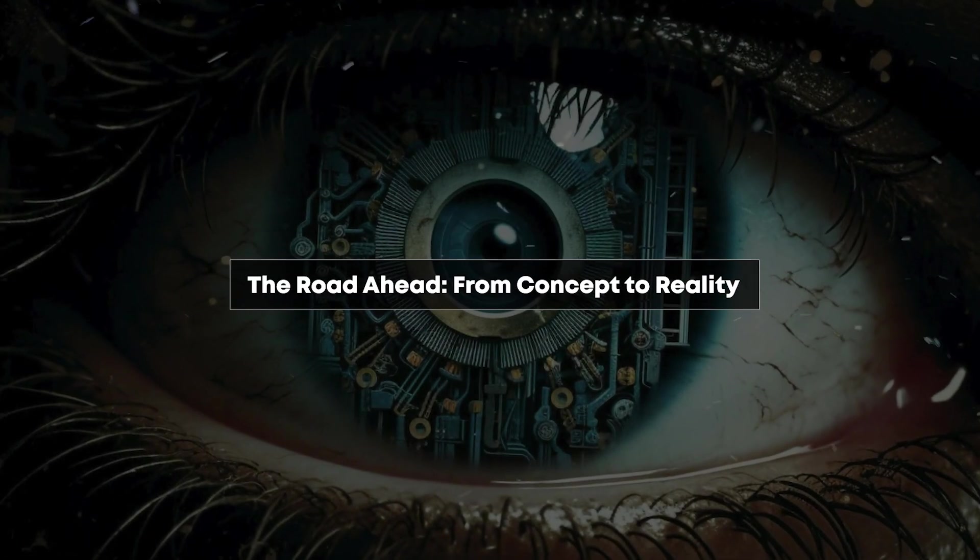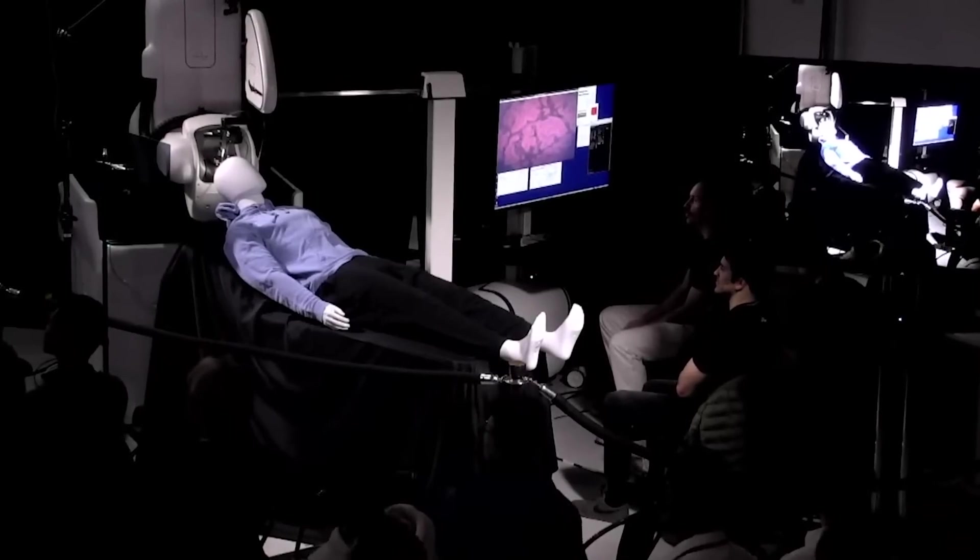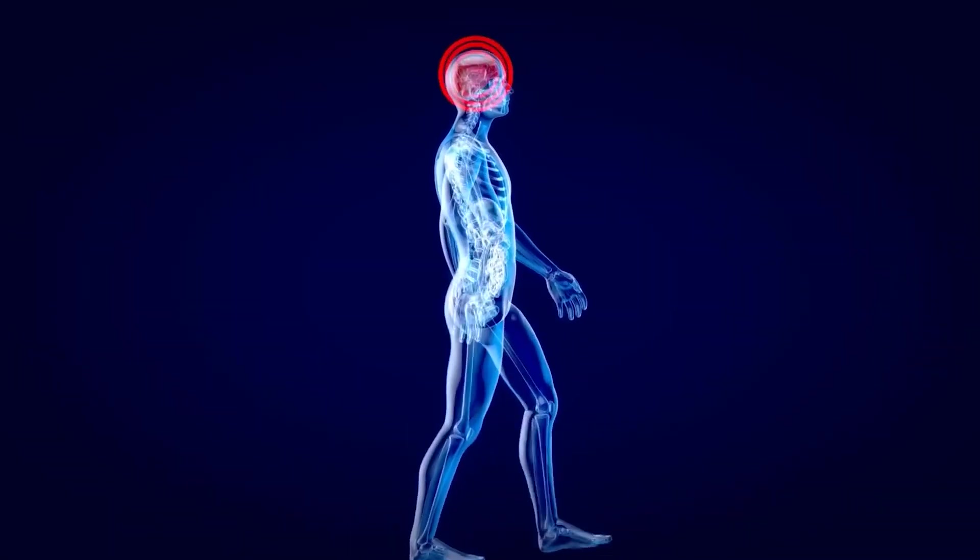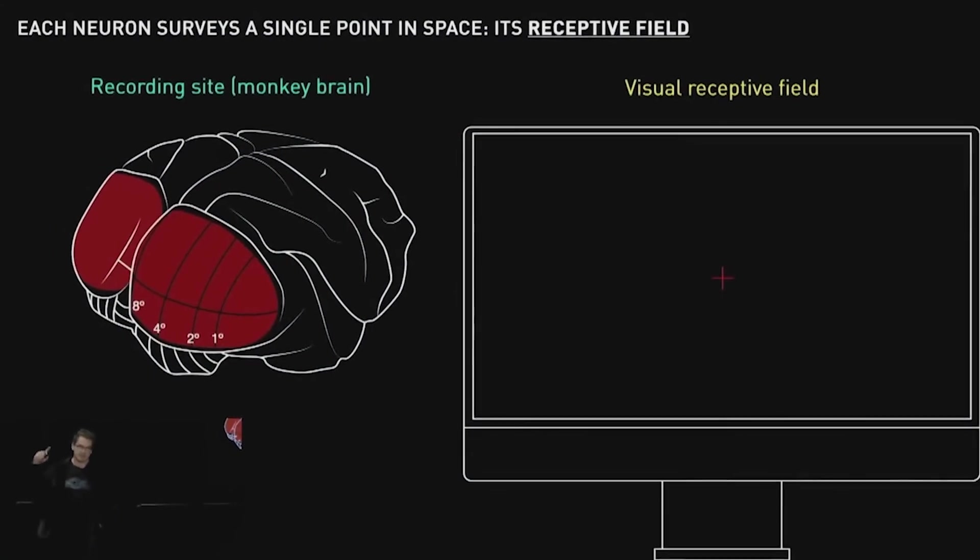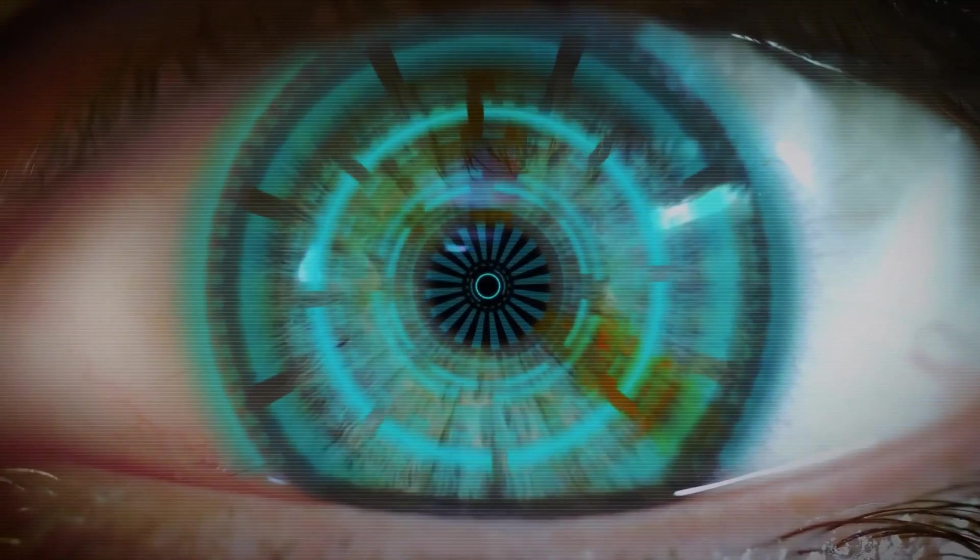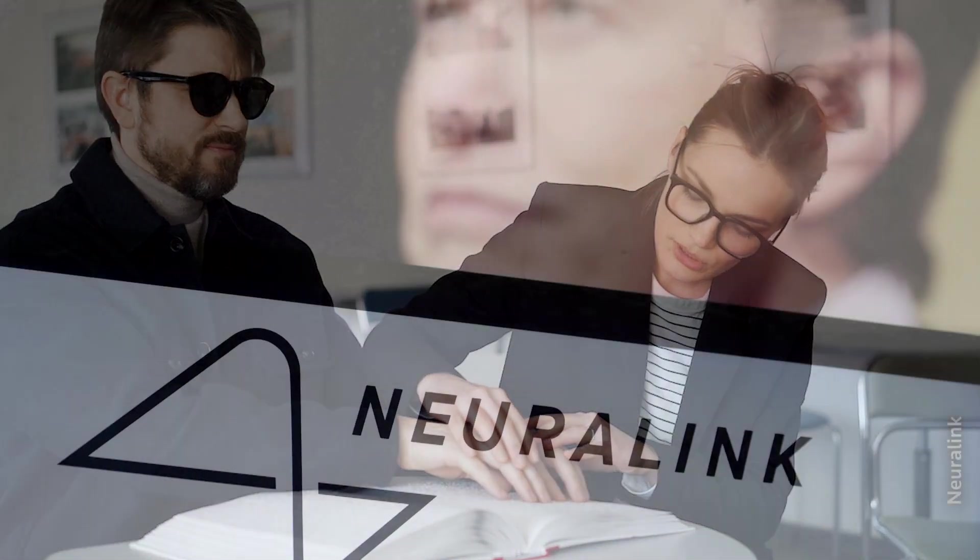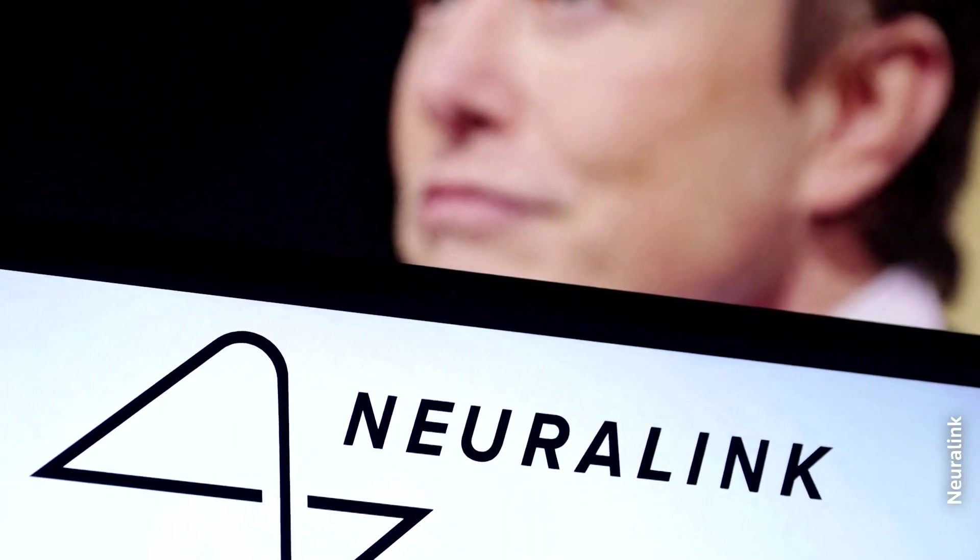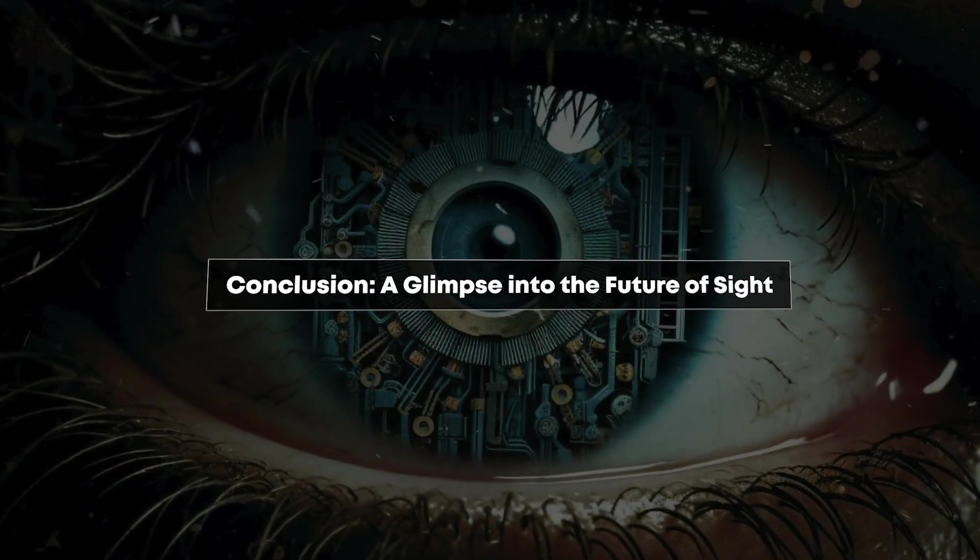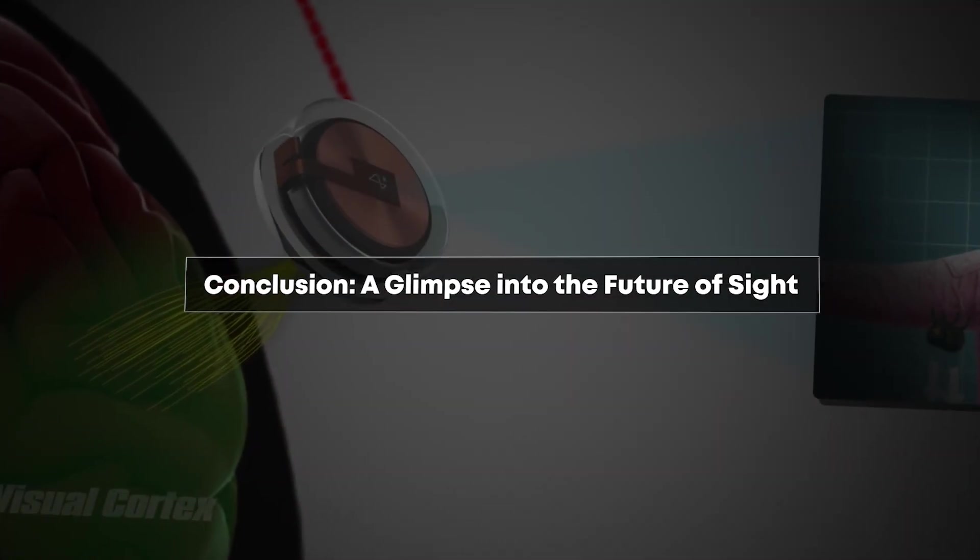Neuralink's journey to cure blindness is just beginning. The company is still in the early stages of human trials for its brain-computer interface technology. Developing a safe, effective visual prosthetic will require years of research, testing and refinement. However, the potential impact is immense. For millions of people worldwide living with blindness or severe visual impairment, Neuralink's technology offers hope for a future where sight can be restored or even enhanced. Neuralink's ambitious goal of curing blindness represents a convergence of neuroscience, computer technology and bioengineering.